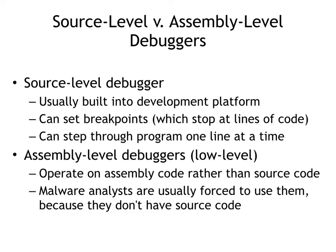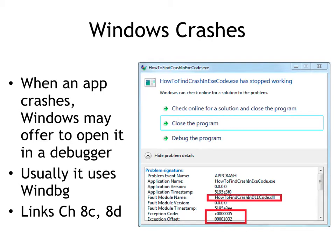Your assembly language debugger is going to take the executable malware and turn it into assembly language instructions, then run it in assembly language so you can see it. If the Windows app crashes, it will pop up a crash box — Windows will say it crashed and give you an option to run it in a debugger. You can install a debugger and make it your default, and typically it opens WinDebug if you have it installed.